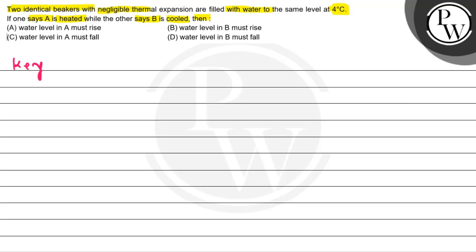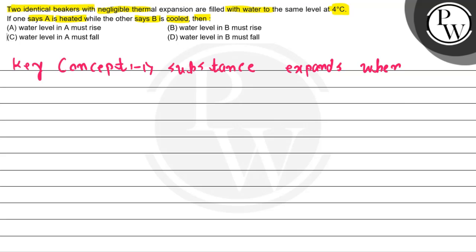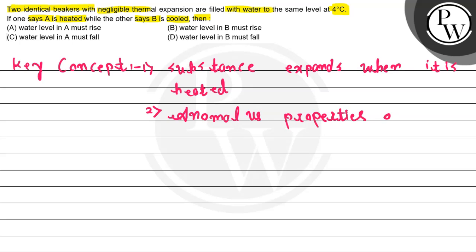Let's see the solution. Before that, let us talk about the key concepts we are going to use here. We are going to use two key concepts. First: a substance expands when it is heated. The second key concept is the anomalous properties of water — below 4 degrees Celsius, if water is cooled, then its density decreases.